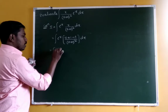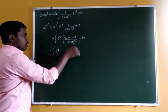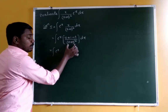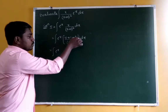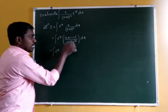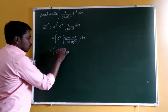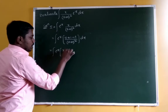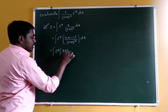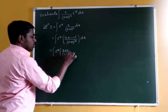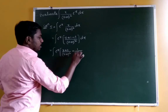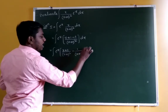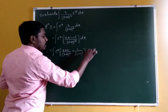Integration of eˣ into — this can be written as: (x+1) divided by (x+1)² minus 1 divided by (x+1)², into dx.